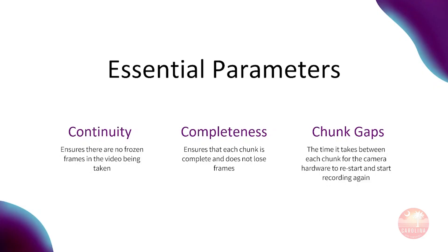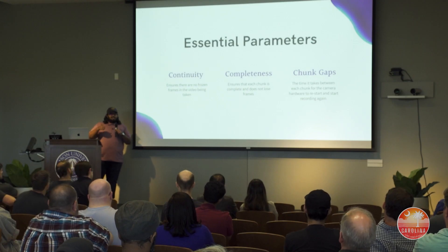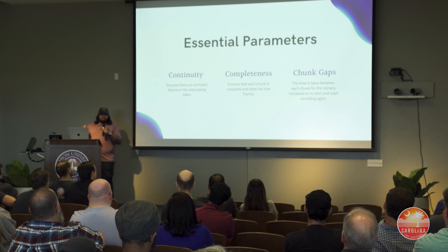We designed a workflow using deep learning, which we'll see next. The essential parameters we were trying to identify were: continuity — meaning no frozen frames between recordings; completeness — meaning if you're recording a 10-minute chunk, all 10 minutes are recorded and you're not losing frames; and chunk gap — meaning between those restarts, you're not losing a lot of time.